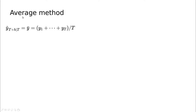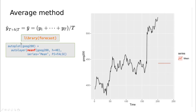One method is called the average method: for h periods in the future, the prediction is the mean value of t periods in the past. If we start at one, it's the mean of the whole time series; change that number and it becomes the mean of that different window. In this course we'll use the 'forecast' library heavily. Using autoplot, we take the dataset and add layers — in this case auto_layer with meanf, which represents mean forecast — taking the average over 40 periods into the future with the label 'mean'.